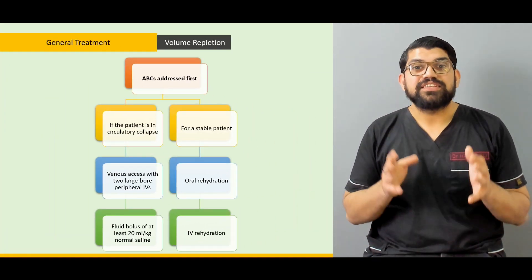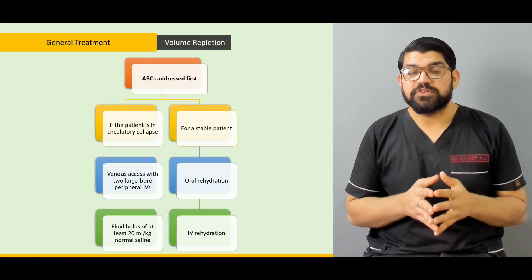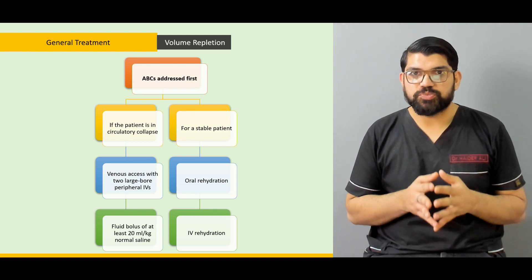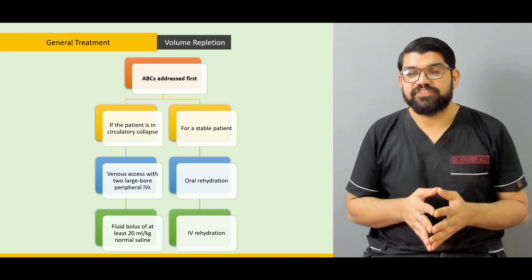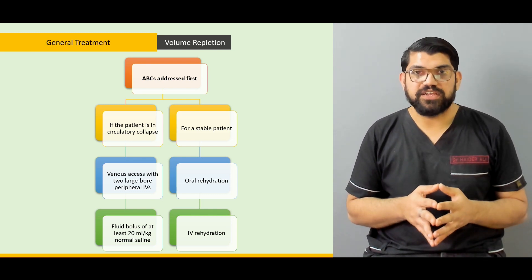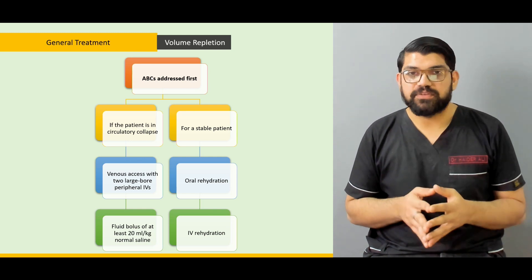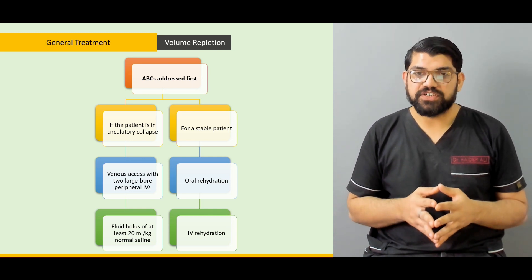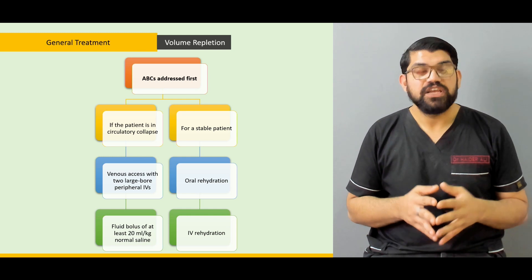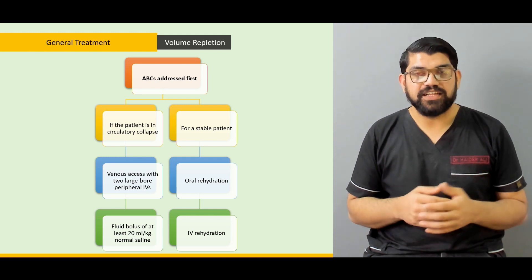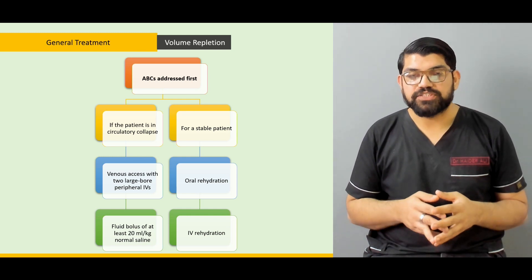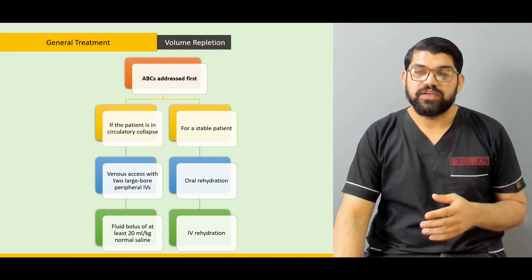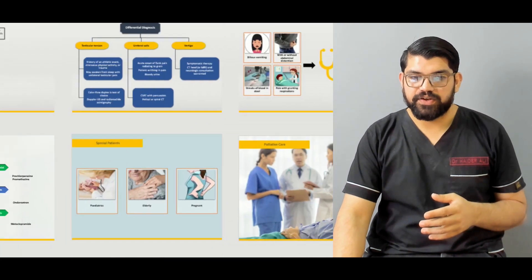We'll talk about the pathway or approach of general treatment plans we have for patients with vomiting — how to assess if the patient is in circulatory collapse, how to assess if the patient is stable, and what to do if the patient is in circulatory collapse. We'll also talk in detail about general treatment plans for volume repletion in patients with vomiting and nausea.